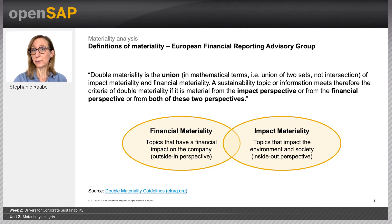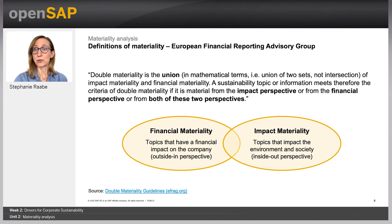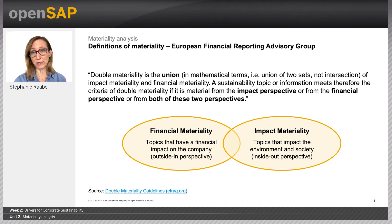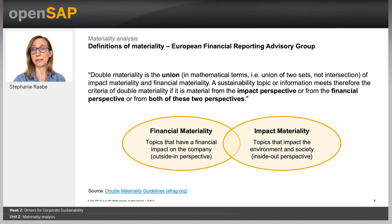The European Union has further developed the concept of double materiality, confirming the term to describe the intersection of financial materiality and impact materiality. A topic is financially material if it triggers financial effects on a company or generates risks or opportunities influencing enterprise value over the short, mid, or long term. From the impact materiality perspective, a topic is material if the undertaking is connected to actual or potential significant impacts on people, the environment, and the economy across its whole value chain.